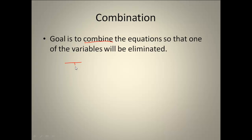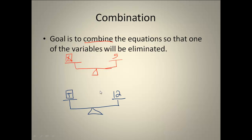Let's say you have a balanced scale. On the left side you have x, and on the right side you have 5, and it's balanced. Then we're going to have a second balanced scale. If our balanced scales are balanced, that indicates that t is equal to 12 and that our x is equal to 5.